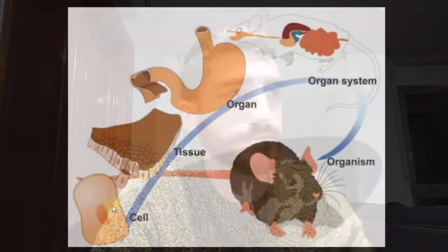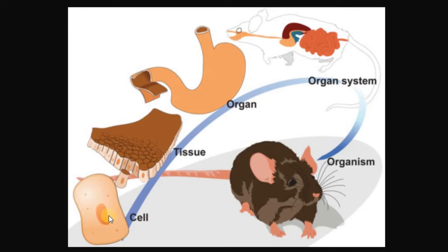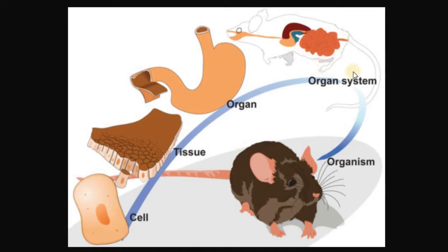This is what we have studied in class, and now we're going to start learning the organization of animals. Living things are made up of cells, but cells can work together and group to form tissue. Tissue is a group of cells. Likewise, tissues can group together to form organs, so an organ is a group of tissues. And organs can group together to form systems or organ systems, so a system is a group of organs. And obviously a group of systems is an organism.